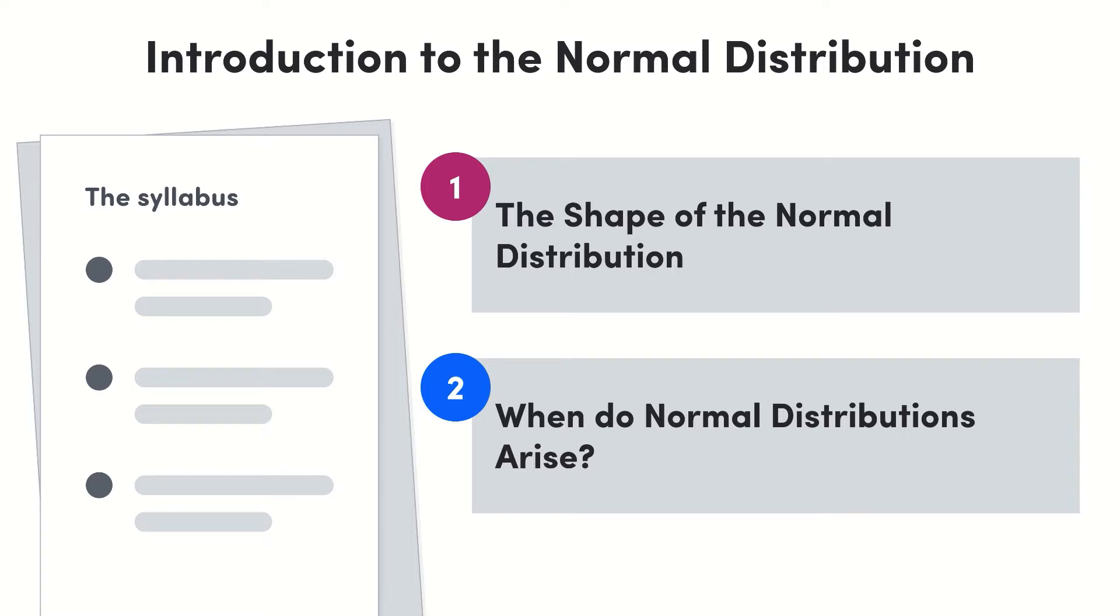We're going to introduce this distribution by first looking at its shape and what this tells us about the variable that it's describing. Then we're going to see when this type of distribution may arise.